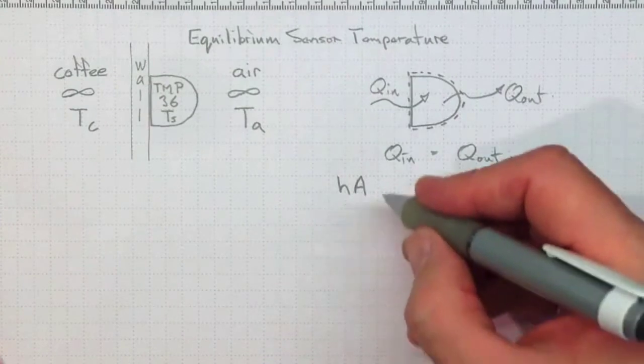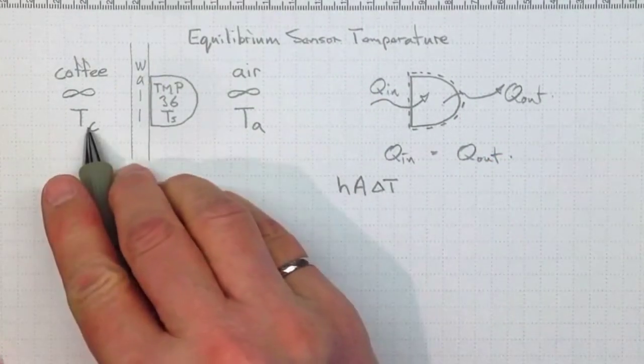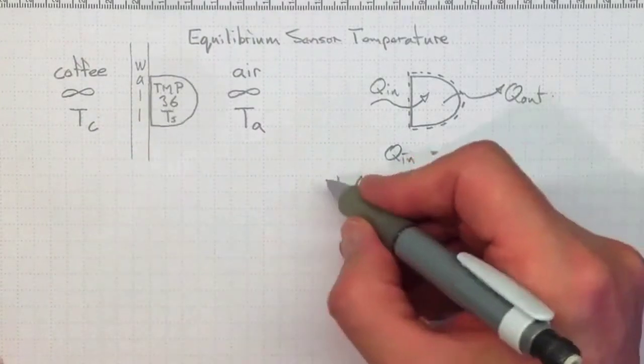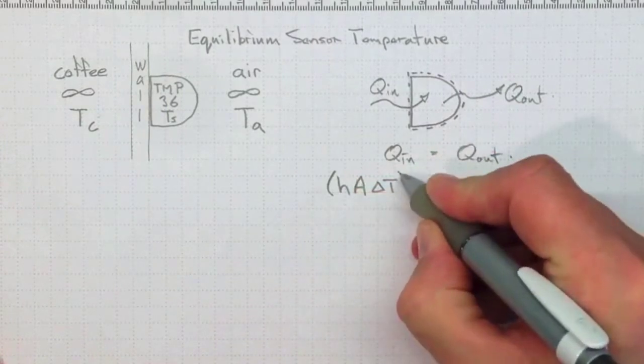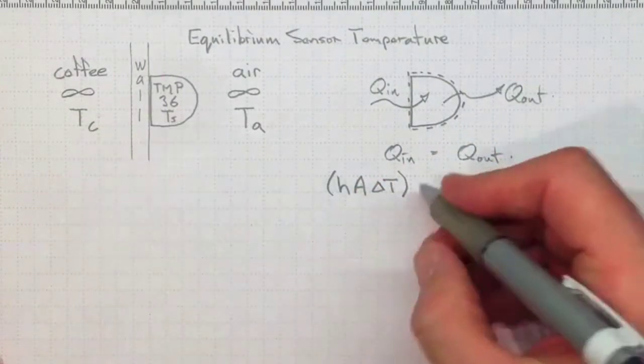And we're going to multiply it by the temperature difference. Because the bigger the difference between the coffee temperature and the sensor temperature, the more energy we're going to transfer into the sensor. So let's just make it clear that all of that is about the interface between the coffee and the sensor.